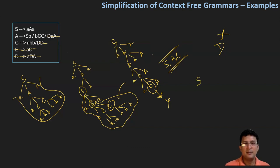So the simplified grammar becomes: S produces aAa, A produces SB or BCC, and C produces abb. This is the simplified grammar for the given grammar. So here we go.